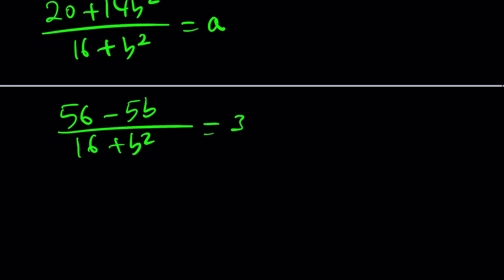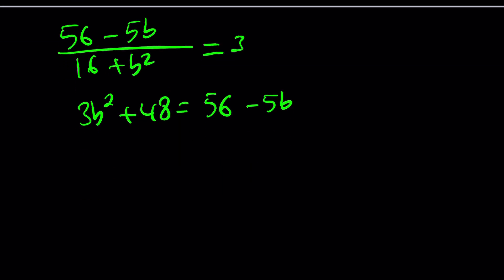And this is a really good thing because this gives us a quadratic equation. And we have a formula. 3b squared plus 48 is equal to 56 minus 5b. Let's put everything on the same side: 3b squared plus 5b, 48 minus 56, that's minus 8, and then that's equal to 0.